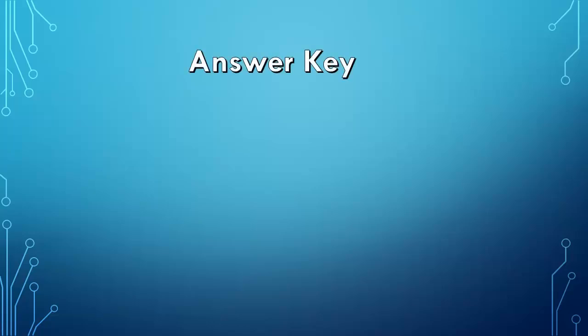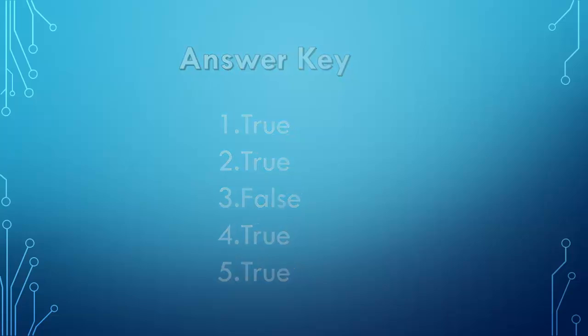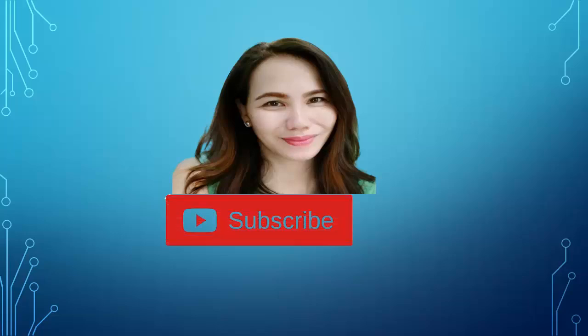Now let's see how many scores you can get from our short quiz. These are the answers: Number 1 — True. Number 2 — True. Number 3 — False. Number 4 — True. Number 5 — True. I hope you learned something today! Don't forget to subscribe to my channel and click the notification bell for more science videos. Have fun and enjoy learning in science. Bye!